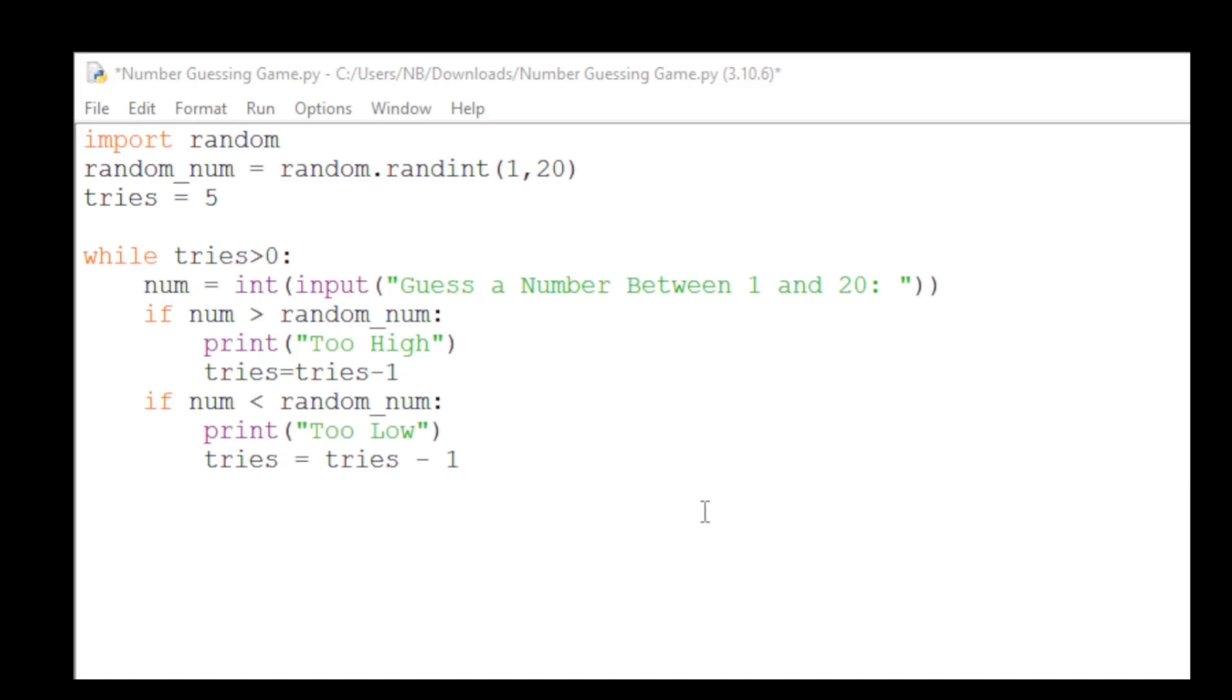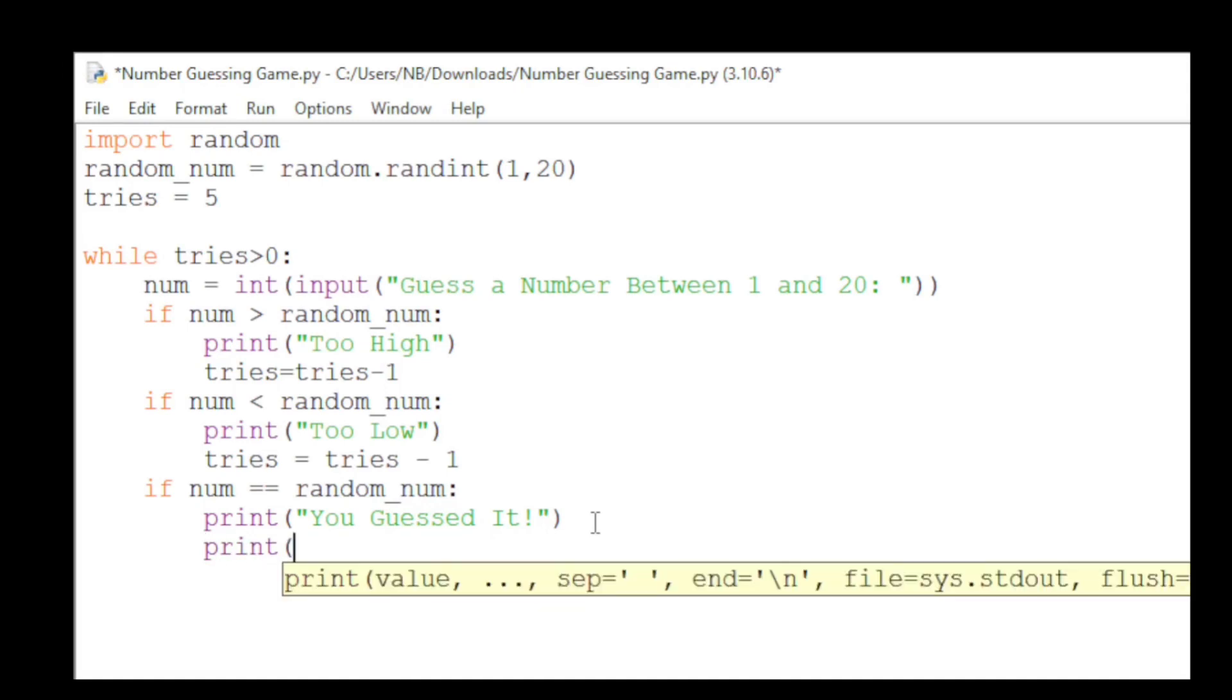Now, we will check if the number that the user entered is equal to the random number. We will have an if statement. So if num equals equals random_num, then we will print you guessed it. To display the total guesses, we will type print total guesses, colon.